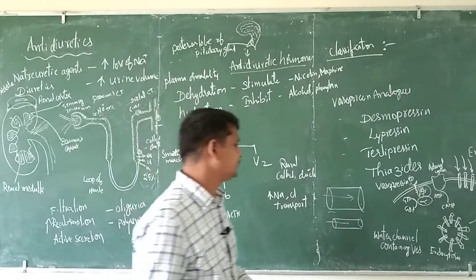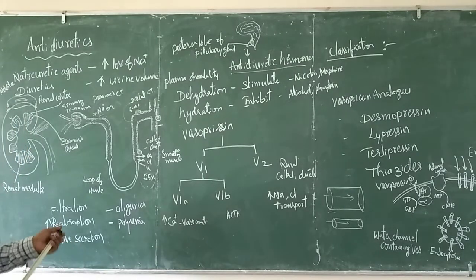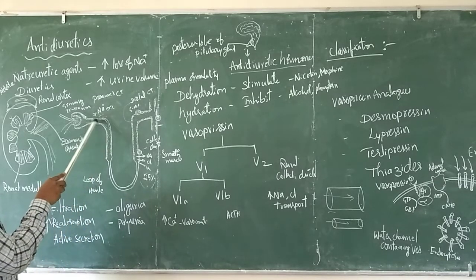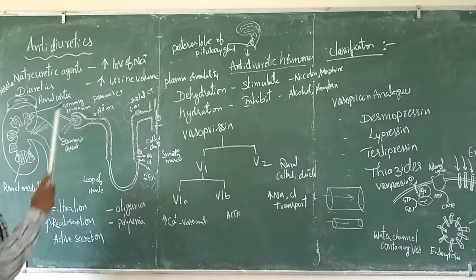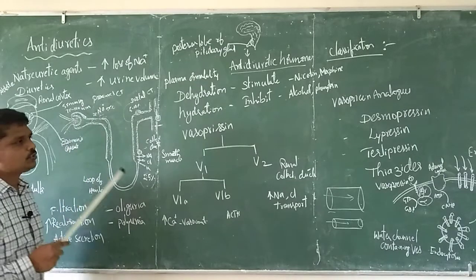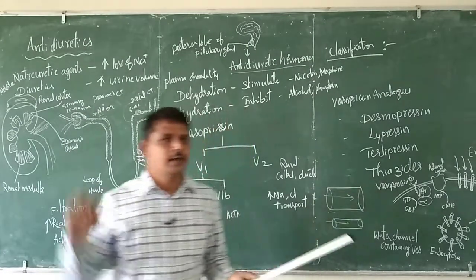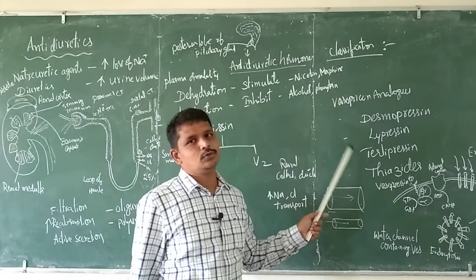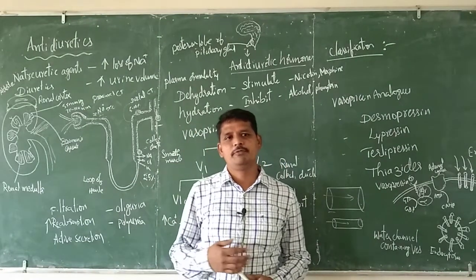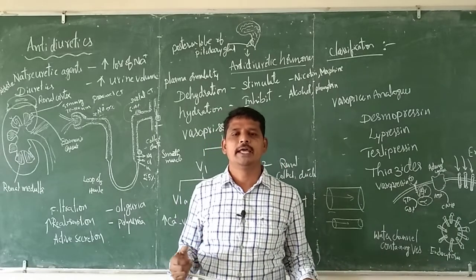Depending on our requirement, thiazides normally show diuretic activity. But in the distal convoluted tubules, thiazides show diuretic activity, while through other mechanisms — highly absorbing substances are absorbed in the proximal convoluted tubules — thiazides can act as anti-diuretic agents. So, anti-diuretic activity drugs are used to control urine volume, particularly in the case of diabetes insipidus.